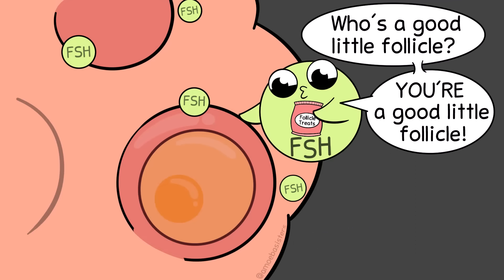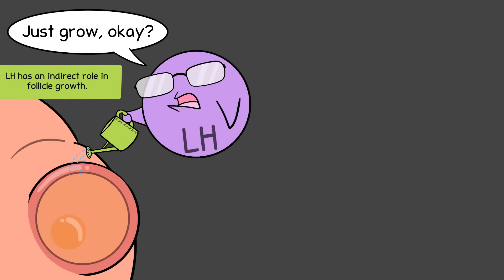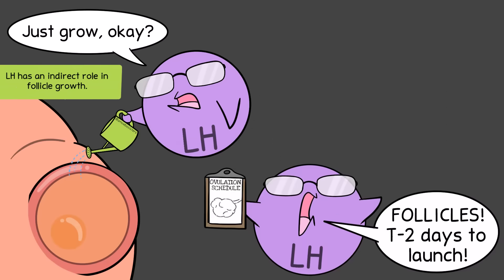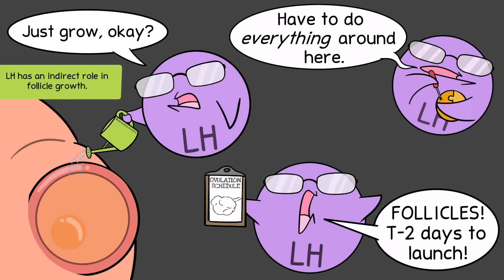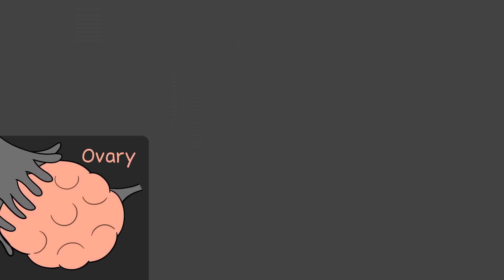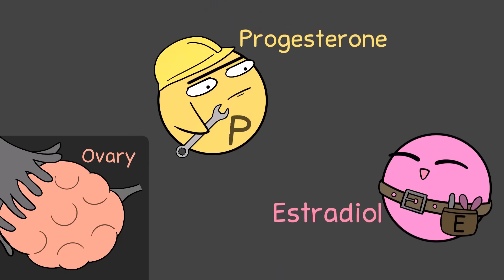For females, FSH has a major role in stimulating follicles, so it helps them grow. The other hormone, LH, also helps with this, but it's also critical in starting ovulation, which releases the egg, and it also helps the ovaries with their work of making hormones. Finally, the ovaries themselves are glands that secrete progesterone and estradiol — which is a form of estrogen — two ovarian hormones that will have major roles in the menstrual cycle.